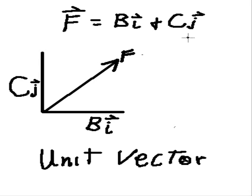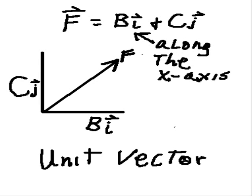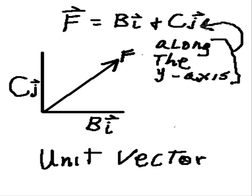And that tells us that this guy here, the i vector, is the unit vector that represents the vector along the x-axis. While this guy, the j unit vector, represents a force along a vector along the y-axis.